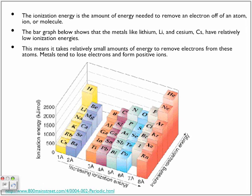Ionization energy is the amount of energy needed to remove an electron from an atom, ion, or molecule. A bar graph available at 800mainstreet.com shows the ionization energy in kilojoules per mole of the atom. The bar graph shows that metals have relatively low ionization energy — they require very little energy to lose their valence electrons.